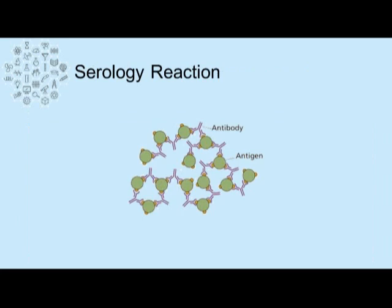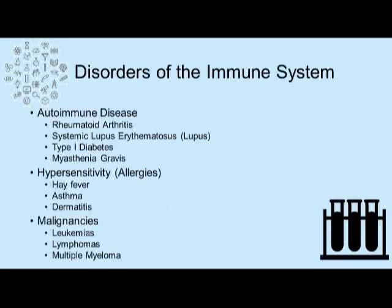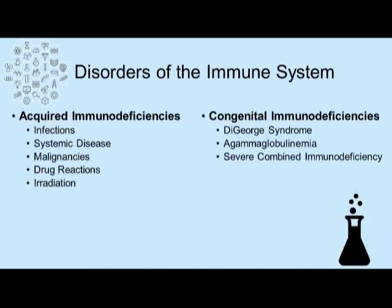Types of disorders of the immune system include autoimmune diseases such as rheumatoid arthritis, systemic lupus erythematosus, type 1 diabetes, and myasthenia gravis. Hypersensitivities or allergies include hay fever, asthma, and dermatitis. Malignancies tested in the serology lab include leukemias, lymphomas, and multiple myeloma. Acquired immunodeficiencies include infections, systemic disease, malignancies, drug reactions, and irradiation.